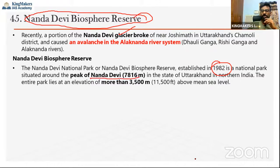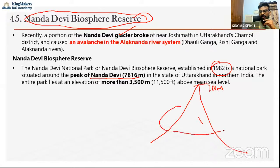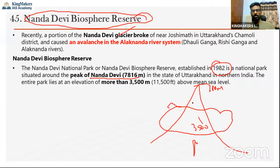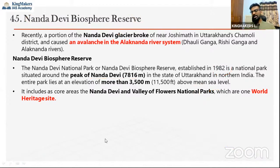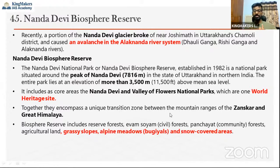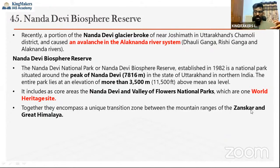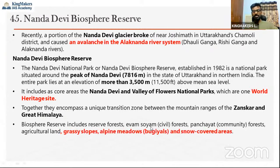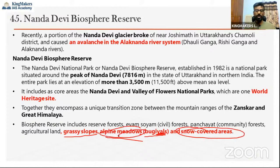The Nanda Devi Biosphere Reserve also contains the Valley of Flowers National Park, which is a World Heritage Site. It is a transition zone between the Zaskar range and the Great Himalayan range. Vegetation includes grassy slopes, alpine meadows (called 'bugyals' locally), and snow-covered areas. Important mammal species include snow leopard, Himalayan black bear, brown bear, and musk deer — a previous UPSC question asked which protected areas have musk deer, so note that snow leopard is found here.